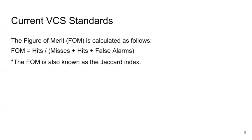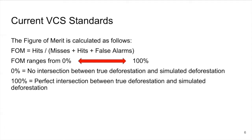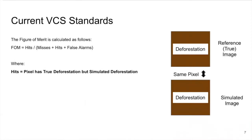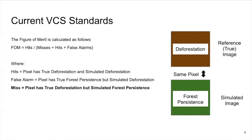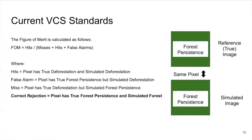The current VCS standards state that FOM equals hits divided by misses plus hits plus false alarms. The FOM represents the intersection of true deforestation and simulated deforestation, where 100% means perfect intersection. A hit is when the model predicted a pixel to be deforested and that pixel is also deforested in the reference image. A false alarm is when the model predicted deforestation but the pixel had forest persistence. A miss occurs when the model simulated forest persistence but the pixel was actually deforested. Correct rejections — pixels with both true and simulated forest persistence — are not included in the FOM calculation.